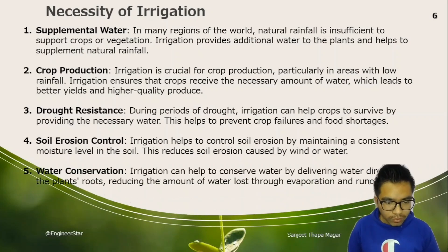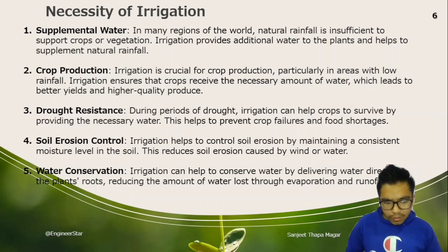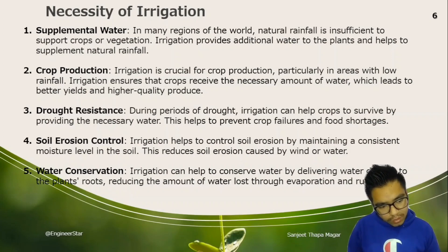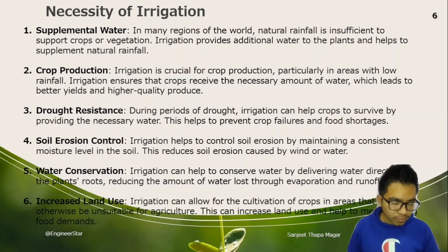Water conservation is also an advantage. Irrigation can help to conserve water by delivering water directly to the plant's roots, reducing the amount of water lost through evaporation and runoff.